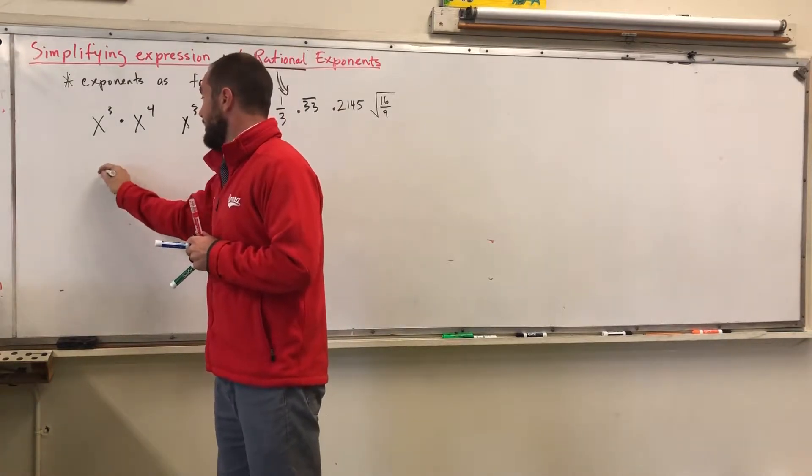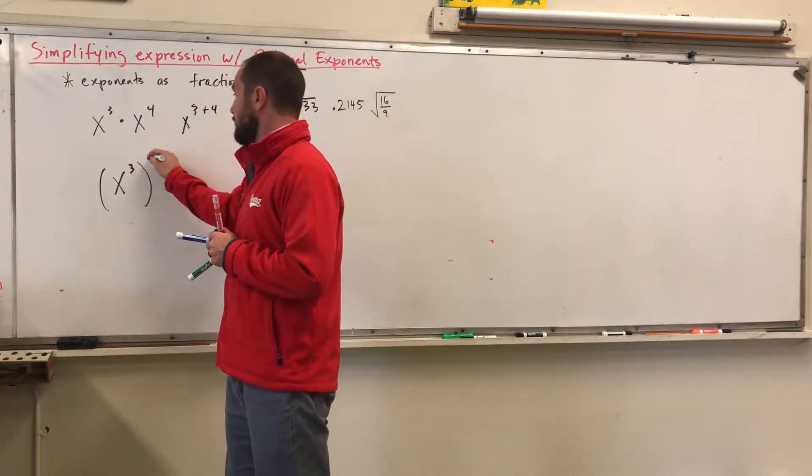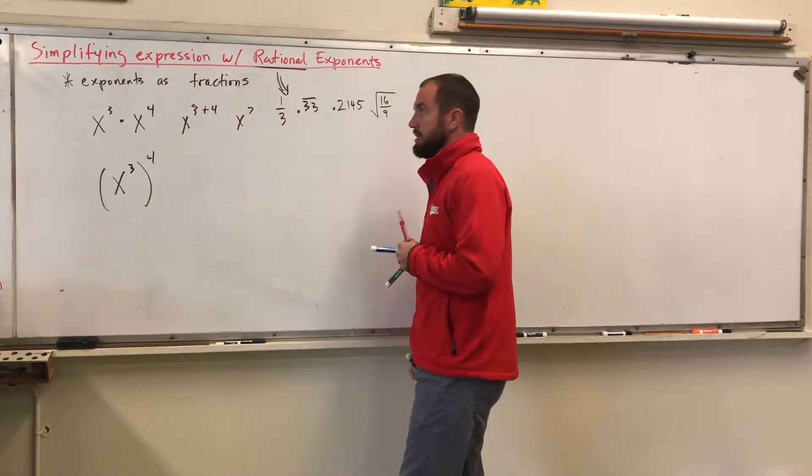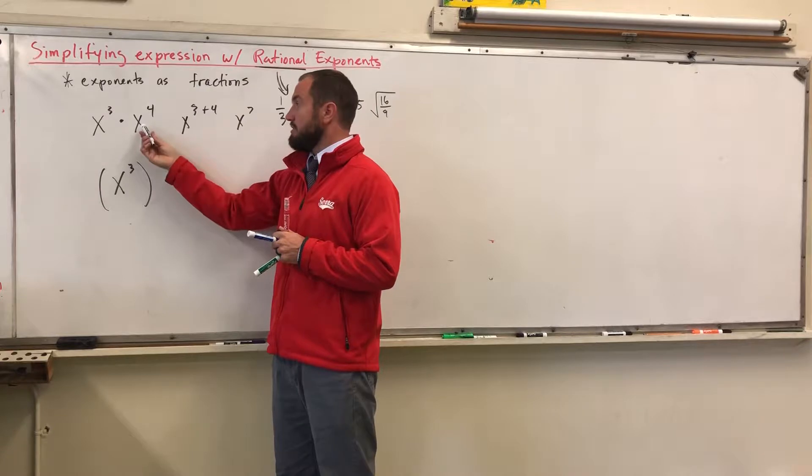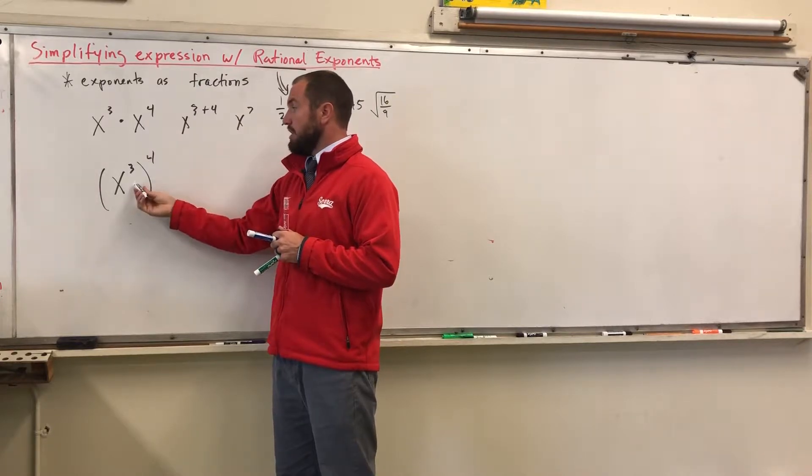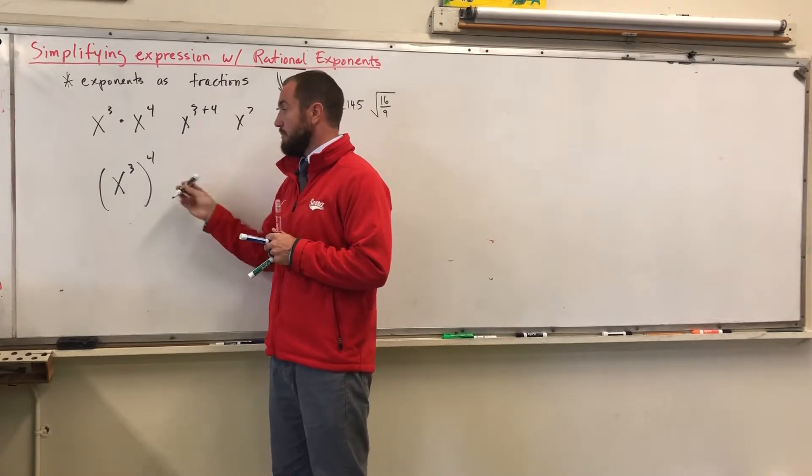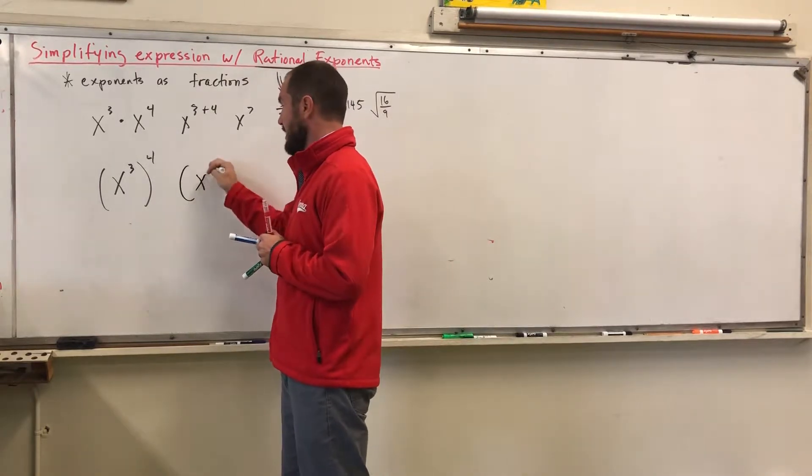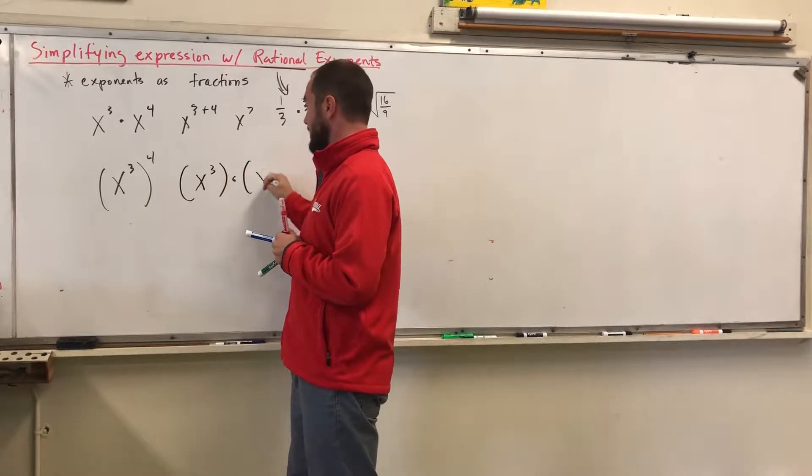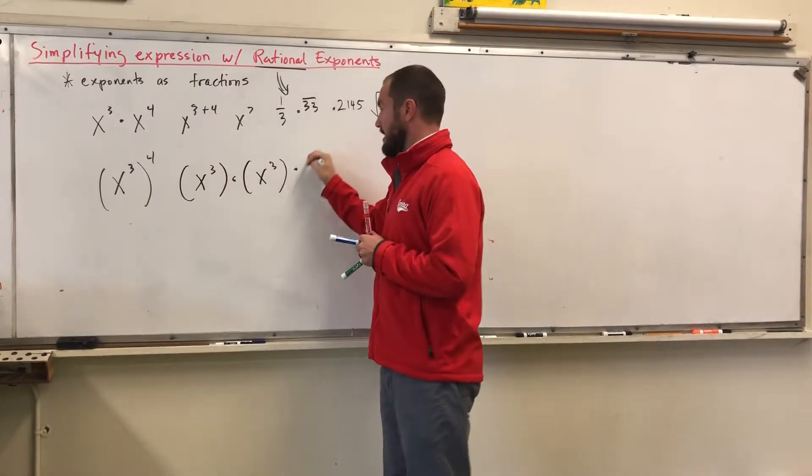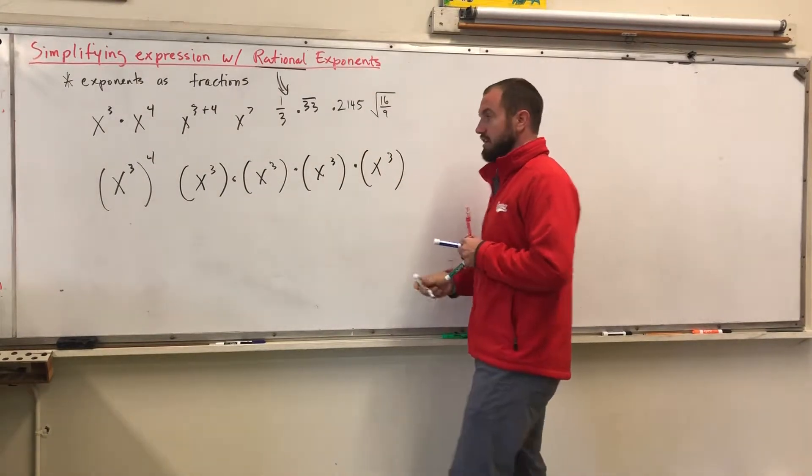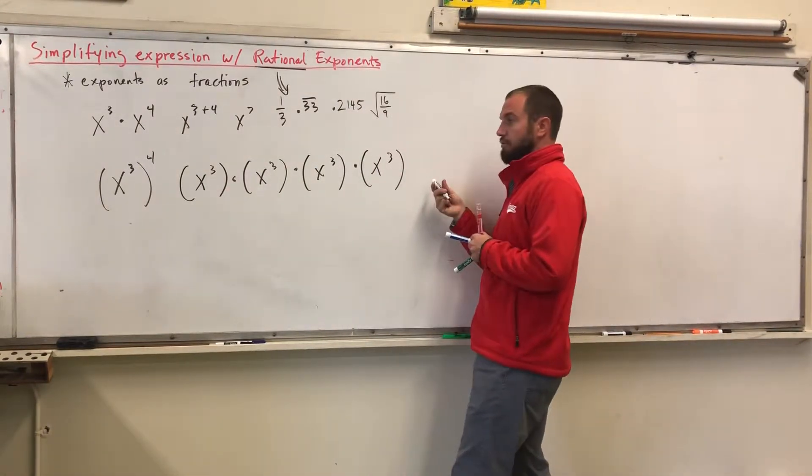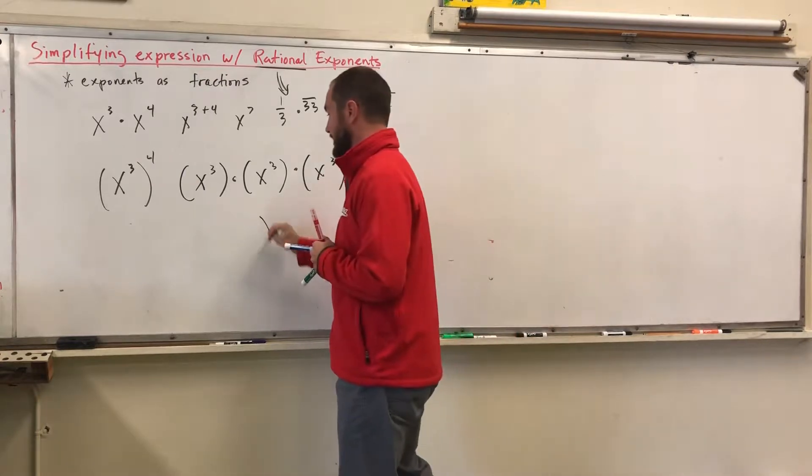And in another case, you could have X to the third raised to a fourth power, and basically we're saying here, in this case, we're adding a certain amount of X's that are being multiplied. Here, we're actually raising a certain power to another certain power. So basically, you're looking at this like X to the third times X to the third times X to the third times X to the third. You're raising X to the third to a fourth power. So basically, you end up with X to the 12th.